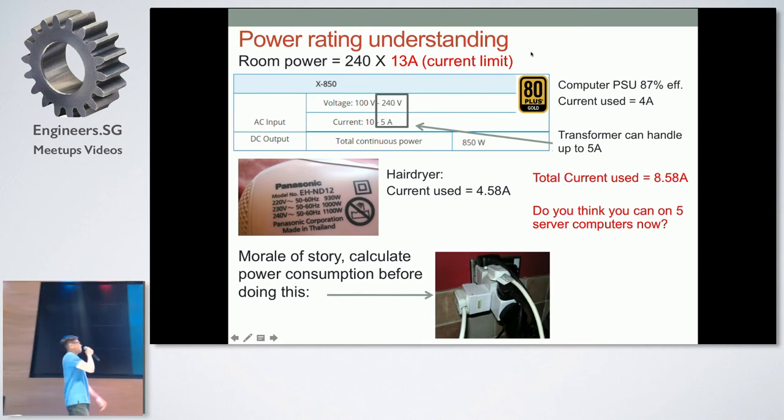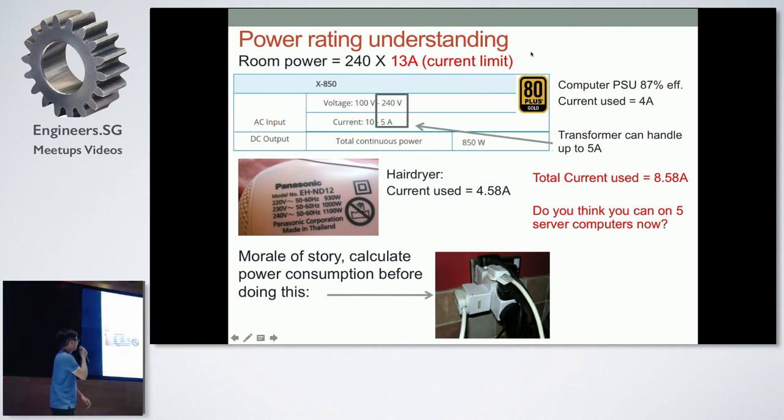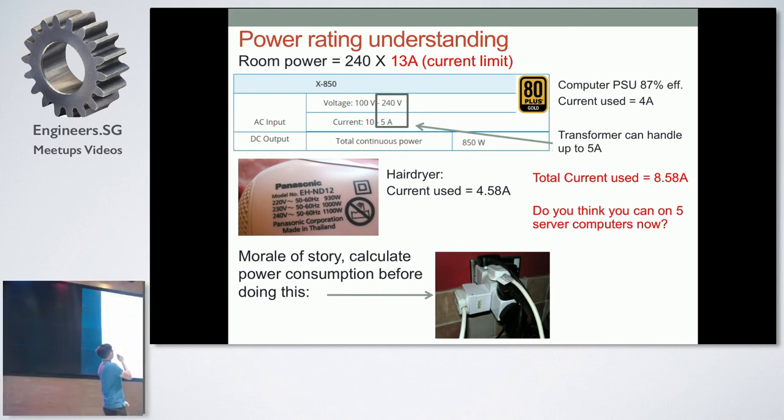So let's say for example, my PC has this PSU power supply unit. It has 5 amperes with 240 volts. And my computer guarantees me 87% efficiency. So more or less I am drawing 4 amperes for my computer. And for those ladies who use hair dryer, hair dryer is a very heavy power consumption device. It's about 4.5 amperes. So if I turn on these two at the same time, you are more or less really drawing about 8.5 amperes from your power supply for your room. So going back to the question, do you think you can run 5 server computers now? I think that depends on the power limit.